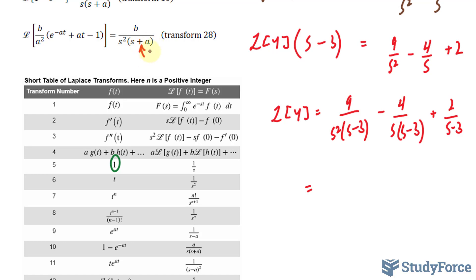Starting with this term, the only difference between the denominator here and the denominator here is that this one has plus a, and this one has minus 3. But that's not a big problem, because I can change this into s + (−3). That means my a value is −3.